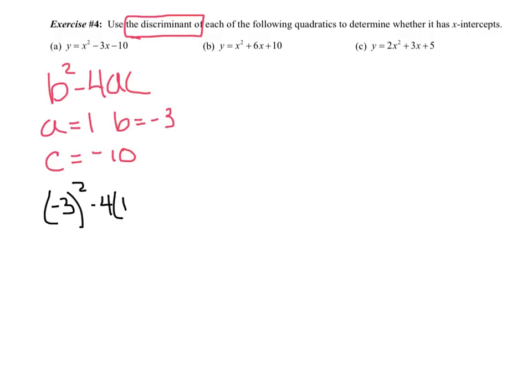So exercise four. Use the discriminant of each of the following quadratics to determine whether it has an x-intercept. So the key word is the word discriminant. Remember, that's just the part under the radical, b squared minus 4ac. So all we need is our a, b, and c. My a is 1, my b is negative 3, and my c is negative 10. And we'll plug them into the formula to see what we get. Remember your parentheses. It's negative 3 squared minus 4 times 1 times negative 10. I get an answer of 49. Therefore, because my discriminant is positive, I will have x-intercepts. I will touch the x-axis.